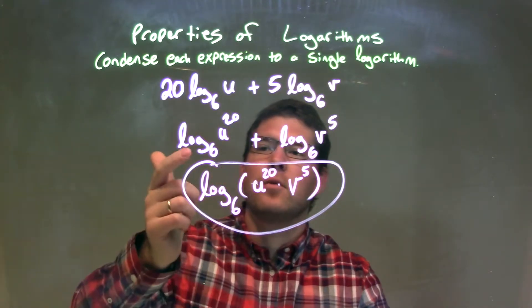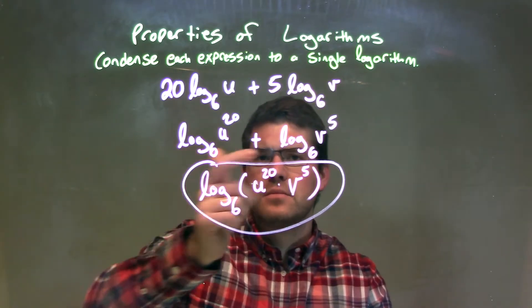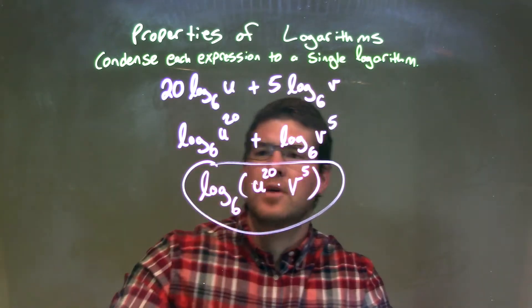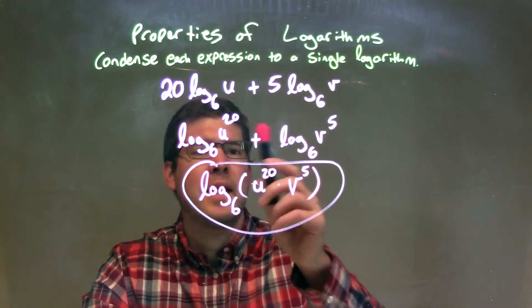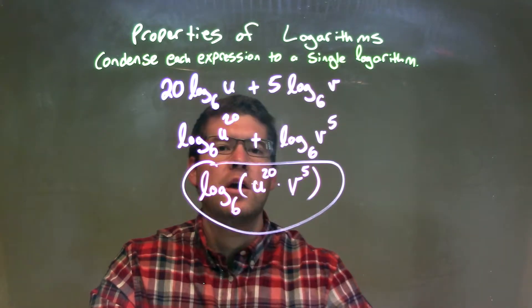From there, I see we have log base 6 right here for both of them. Okay, they're the same base, right, for both of them. So we can combine them, and that addition becomes multiplication. And we combine it.